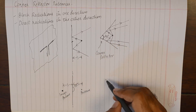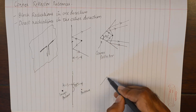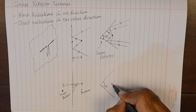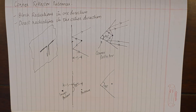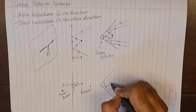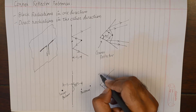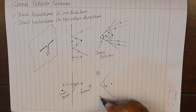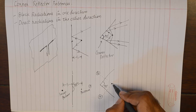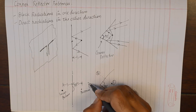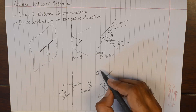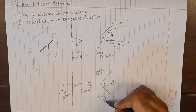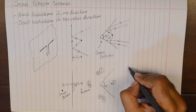This concept can be extrapolated when we bend the reflector by an angle of 90 degrees. In the case of a corner reflector with a corner angle of 90 degrees, we get four image antennas — or in other words, we get an array of four antennas, out of which one is the real antenna, number two is the image antenna, and three and four are also image antennas. However, some of them are going to be out of phase from the main antenna.